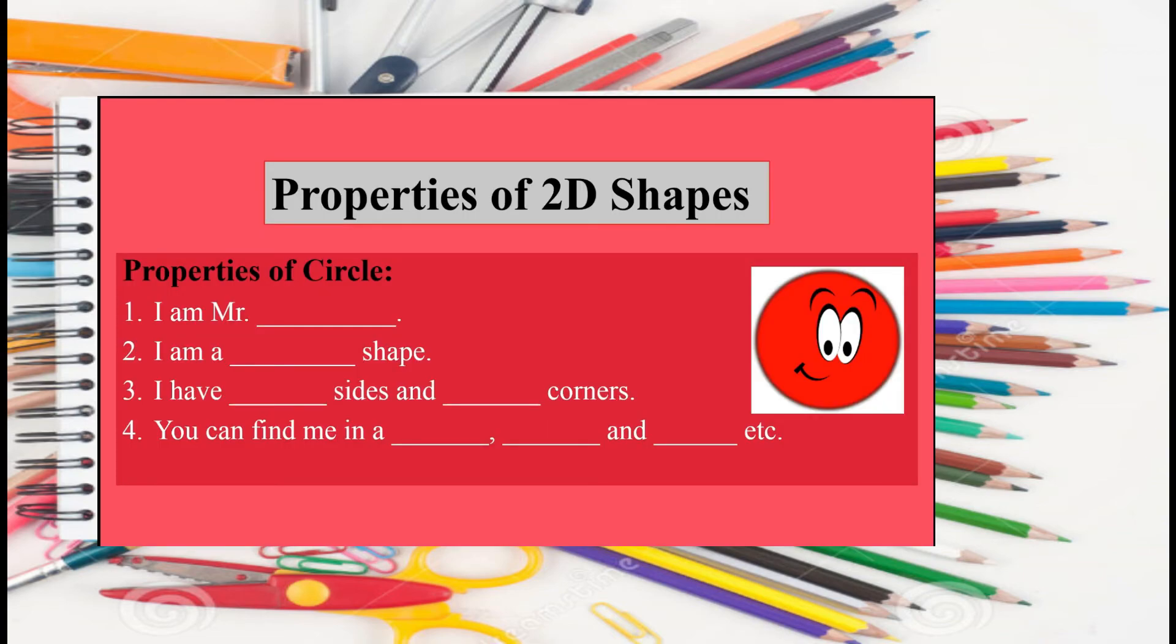Now, it's time to do the home assignment. As in home assignment, you have to write down the properties of 2D shapes. Firstly, you have to copy down the format for the properties of Mr. Circle.